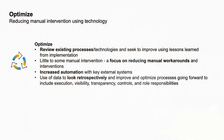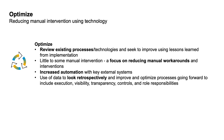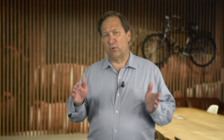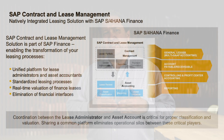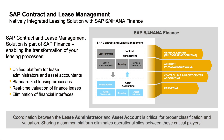The second level of adoption is to try and optimize your leasing processes. To optimize your leasing processes, the existing leasing processes are reviewed and there's a conscientious effort to reduce the number of manual workarounds and to look for ways to increase automation. SAP Contract and Lease Management is a great tool to help you optimize your leasing processes. It is a unified platform for lease administrators and asset accountants, and it also supports the standardization of leasing processes for each asset class.